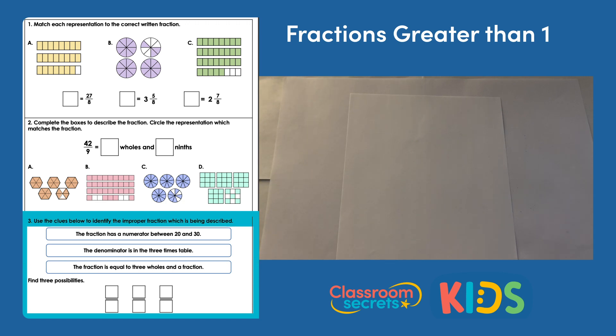Question three: use the clues below to identify the improper fraction which is being described. So we're looking for a fraction where the numerator is bigger than the denominator. The clues are: the fraction has a numerator between 20 and 30, the denominator is in the three times table, and the fraction is equal to three wholes and a fraction.